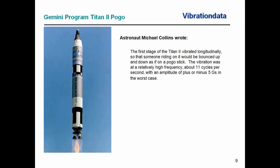Astronaut Michael Collins — best known for the Apollo 11 mission, during which he orbited the moon while Neil Armstrong and Buzz Aldrin were the first men to land — previously flew on the Gemini program. Collins noted that the first stage of the Titan II vibrated longitudinally so that someone riding it would be bounced up and down as on a pogo stick. The vibration was at about 11 cycles per second, which is 11 Hz, with an amplitude of plus or minus 5G in the worst case. He was very precise about the amplitude metric — the zero-to-peak acceleration was 5G.